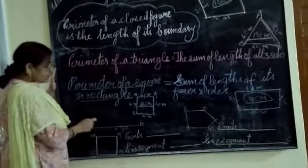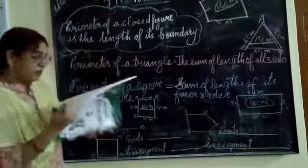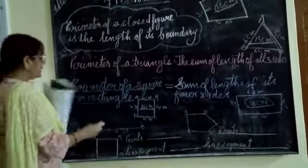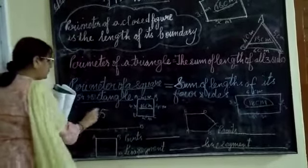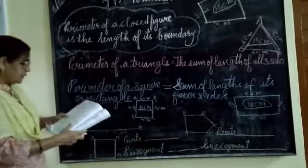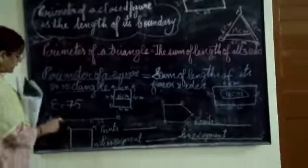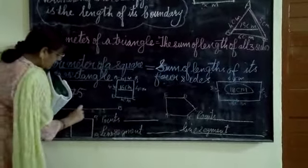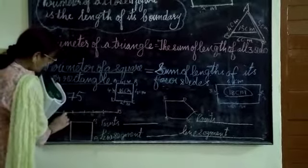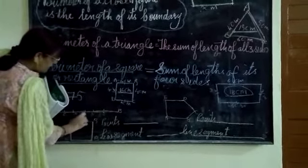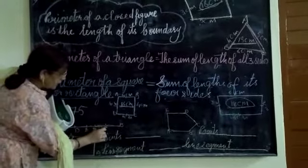Now briefly I will show you how to do the exercise. Exercise number 7.5. Here we are asked to draw a line A, B and put points on it. You draw a line A, B and put points like 1, 2, 3, 4, 5, and then name them C, D, E, F, G.